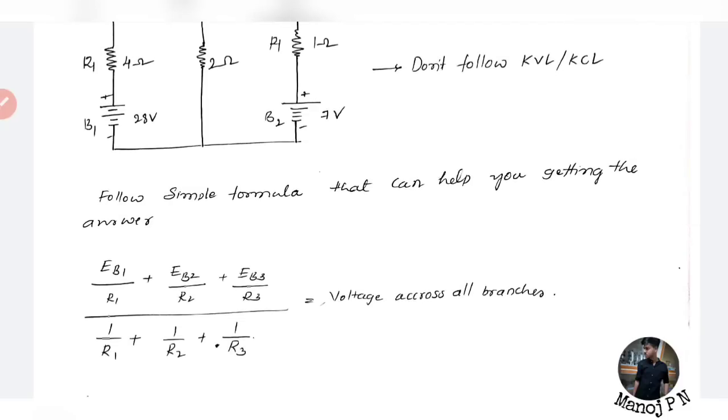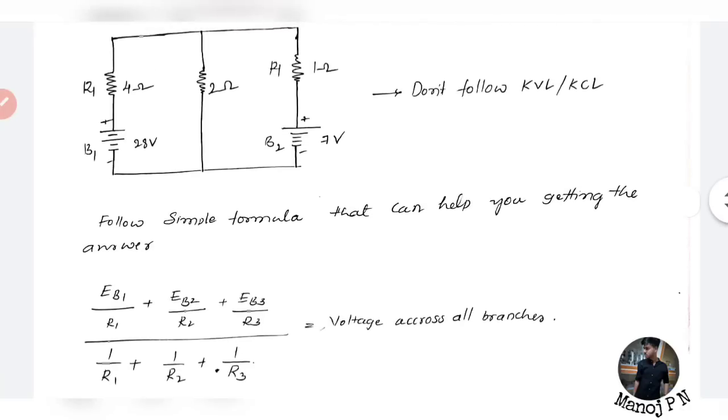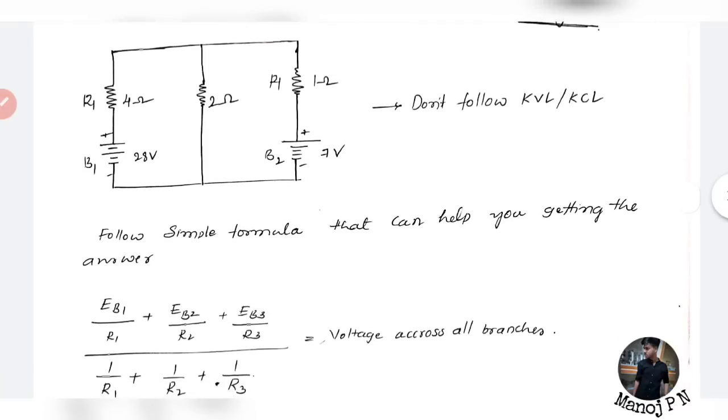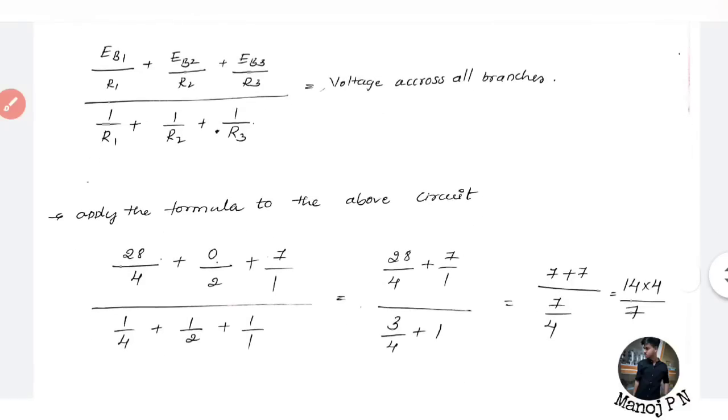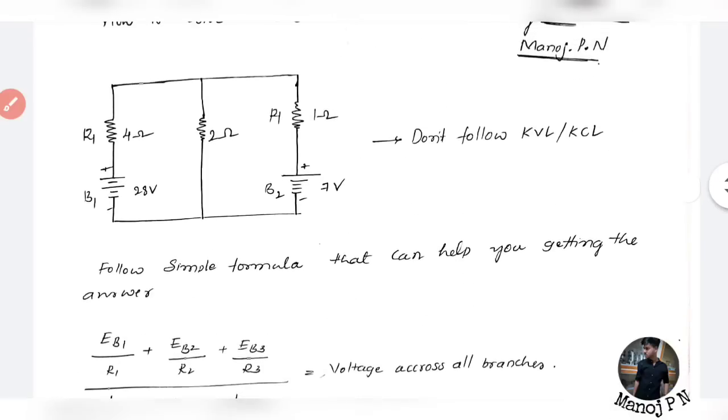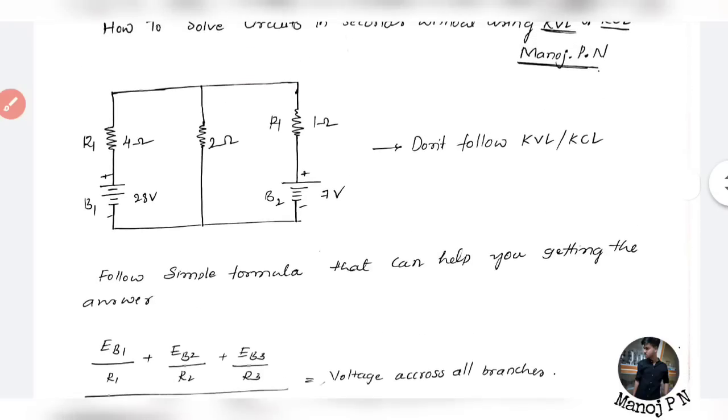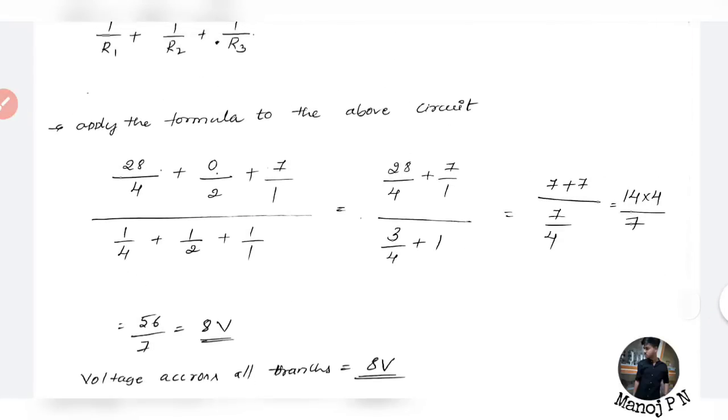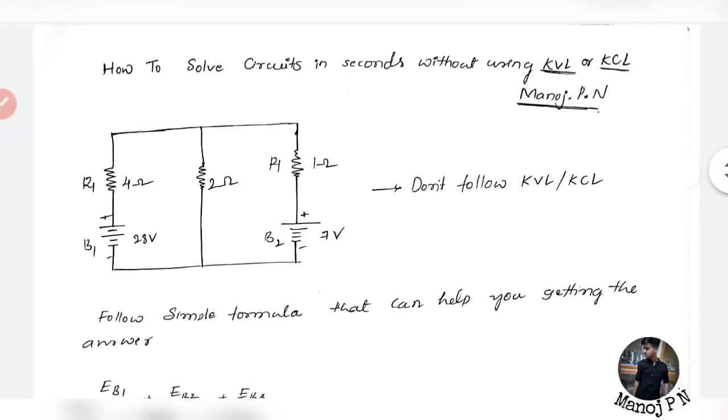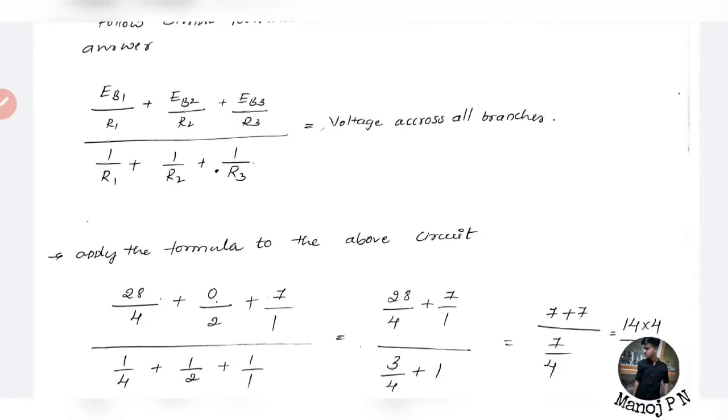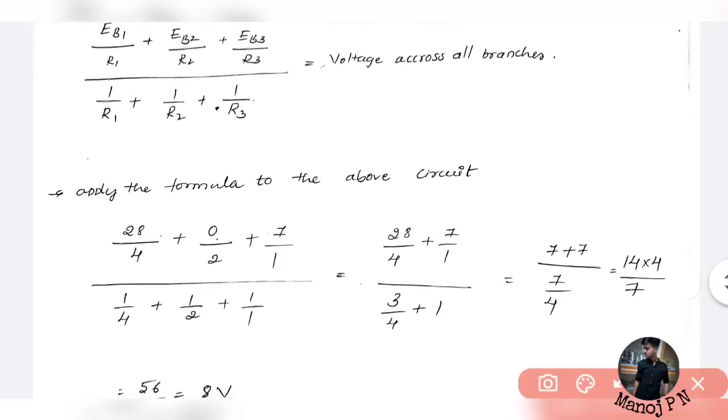Next, what is it? Total, the entire term is divided by 1 by R1 plus 1 by R2 plus 1 by R3. If you solve this equation, you are going to get immediately the voltage across all the branches. See, look at this. Here, Eb1 is 28V, and R1 value is 4, so substitute 4. Then Eb2, Eb2 is not there. There is no resistance to this battery, so Eb2 value for resistance 2 is 0, 0 divided by 2.